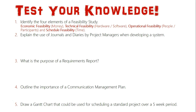Operational feasibility is basically about people using the system — mainly the participants being able to use the actual information system to carry out the information processes. And schedule feasibility refers to the amount of time available to make this project happen.